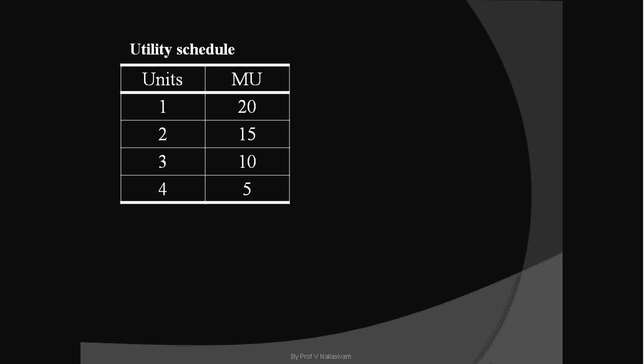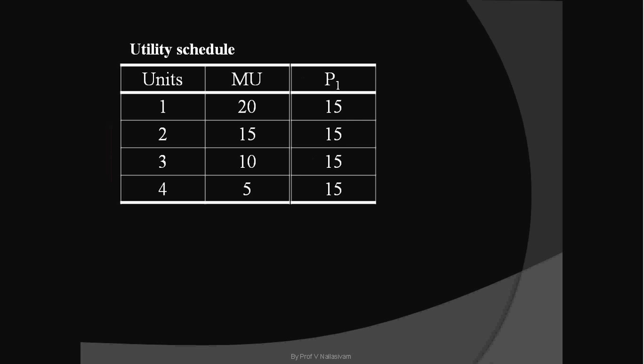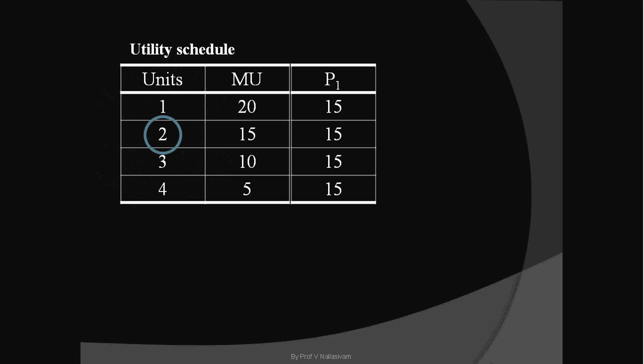Look at this table — this is a utility schedule. As the consumer consumes more units of a commodity, he gets less and less marginal utility. Based on this law, we are going to derive the demand schedule. To begin with, let us assume the price of the product the consumer is consuming is 15 rupees. At this price, the consumer consumes two units of the commodity, because only when he consumes the second unit is he able to equate marginal utility with price.